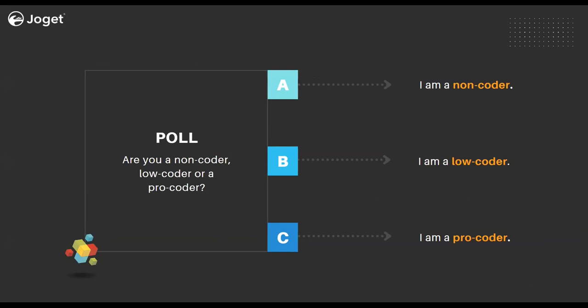This poll asks what best describes you — non-coder, low-coder, or pro-coder. We've got about 70% who've already voted. The results show about 37% are non-coders, with the second being pro-coders and about 30% being low-coders. Let's move on towards the demo.